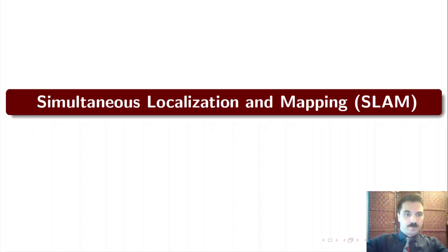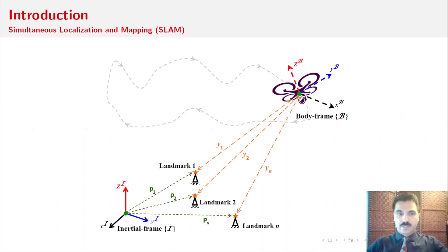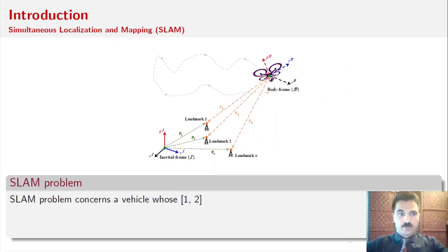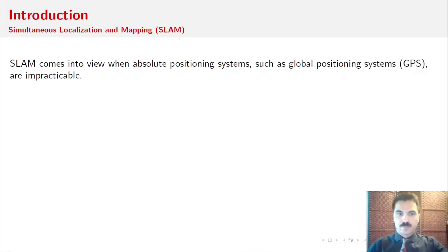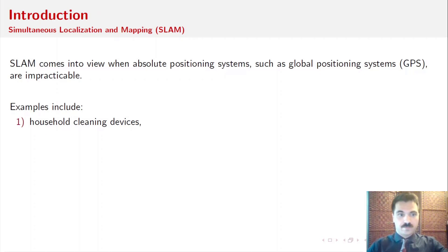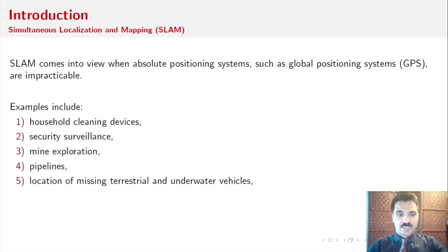Simultaneous Localization and Mapping Problem. The SLAM problem can be represented by this figure. The SLAM problem normally concerns a vehicle whose pose — or position and orientation — is unknown, traveling within an unknown environment, or an unknown map. The SLAM problem becomes an essential task when the positioning system is unreliable, such as Global Positioning Systems or GPS. We can see the SLAM problem is necessary in various applications, for example, household cleaning devices, security surveillance, mine exploration, pipelines, location of missing terrestrial and underwater vehicles, reef monitoring, and many more.